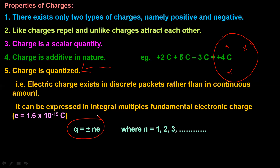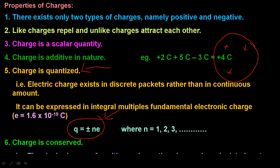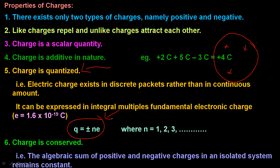Q = Ne. This leads to the conservation of charge. Similar to conservation of momentum and energy, the total momentum before an event must equal the total momentum after an event. The total charge of an isolated system is constant.